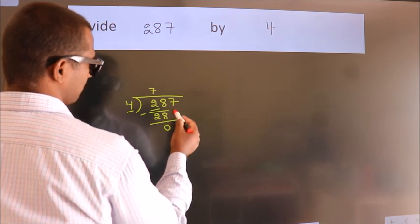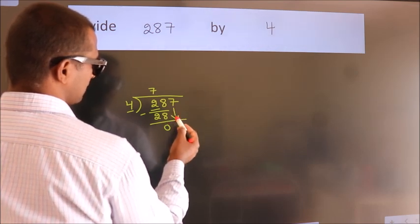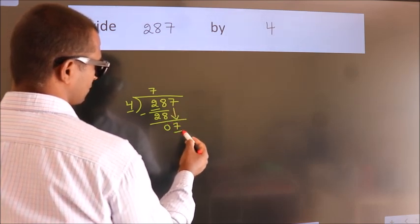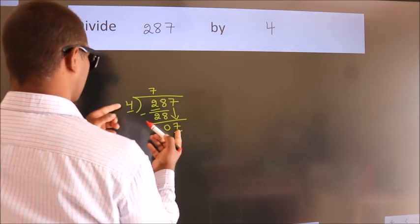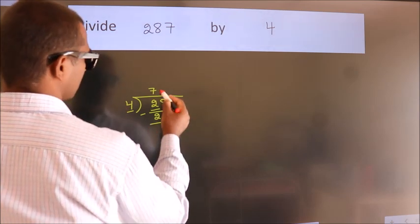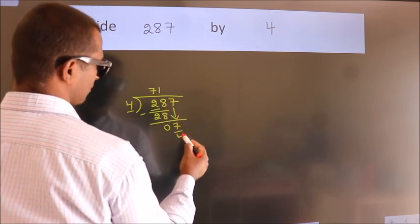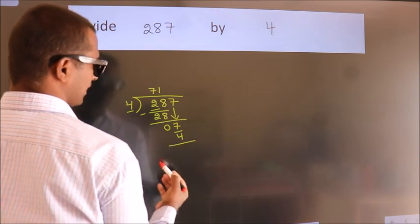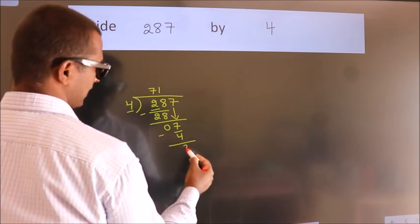After this, bring down the beside number. So 7 down. A number close to 7 in 4 table is 4 times 1 equals 4. Now we subtract. We get 3.